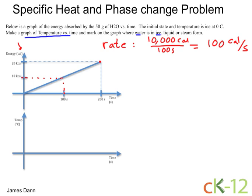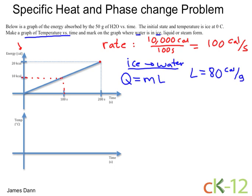It starts off as ice, so let's first see how long it takes to go from ice to water. Well that's a phase change. For phase changes we use the formula Q equals ML, where L is the latent heat of fusion. And for water it's 80 calories per gram.